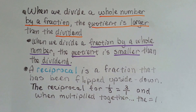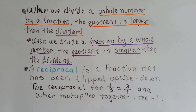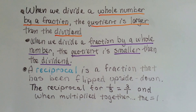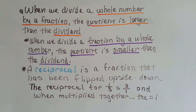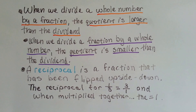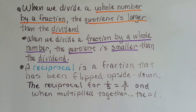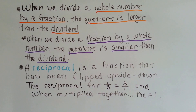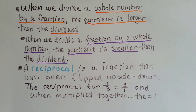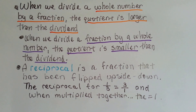When we divide a whole number by a fraction, so the whole number is first, it's the dividend. The quotient is larger than the dividend. When we divide a fraction by a whole number, the fraction is first, it's the dividend. The quotient is smaller than the dividend, than the fraction.